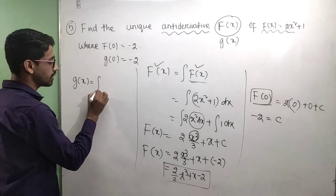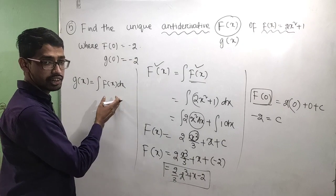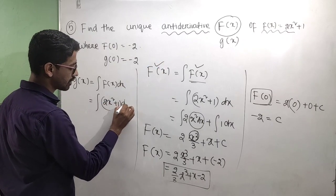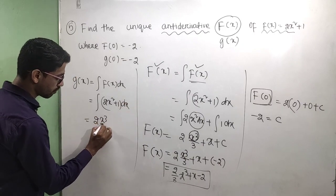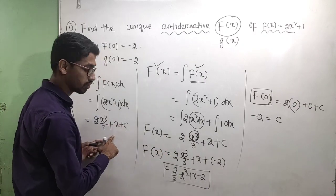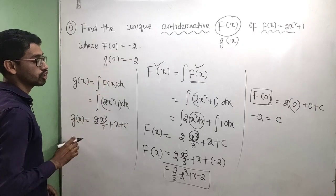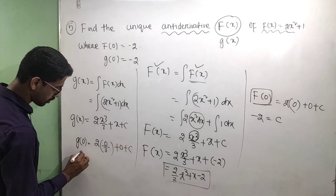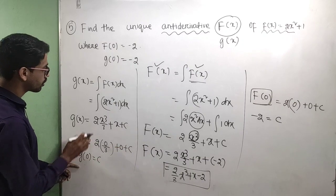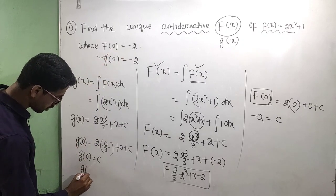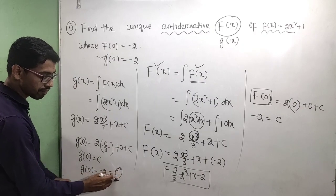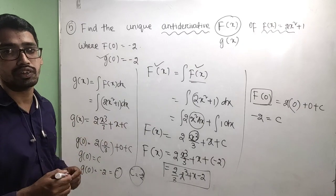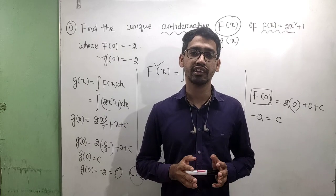To recap: F of x equals integration of f of x dx. Integration of f of x dx, which is integration of two x square plus one dx, gives two x cube by three plus x plus C. Applying the condition G of zero equals minus two: two into zero by three plus zero plus C equals C, so G of zero equals C equals minus two. Therefore G of x equals two x cube by three plus x minus two. This completes the antiderivative exercise.